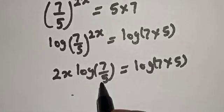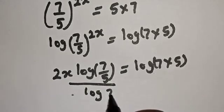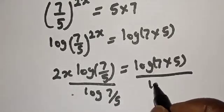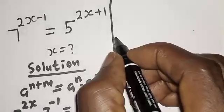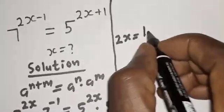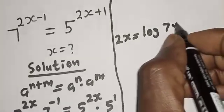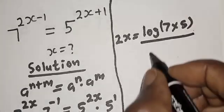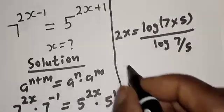Let's divide both sides by log 7 over 5. This one will cancel this. So, 2s is equal to log of 7 multiplied by 5, all over log of 7 over 5.